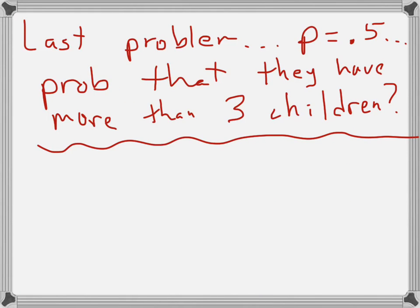Next problem. And the last new problem that we'll do, we'll do some review questions at the end. Same problem. What is the probability that, with 0.5 probability of success of having a girl, what is the probability that they have more than three children? So, we're going to look at the probability that X is greater than three, which is one minus the probability that X is less than or equal to two.